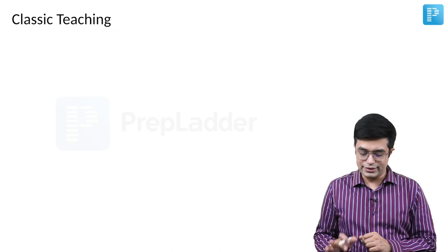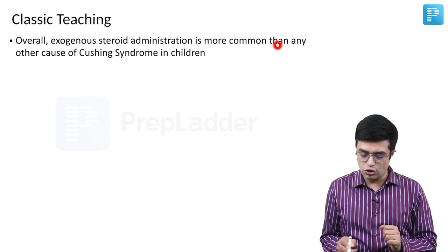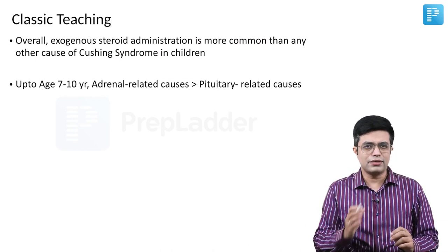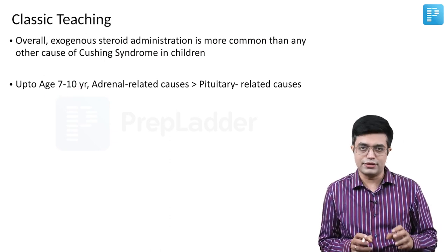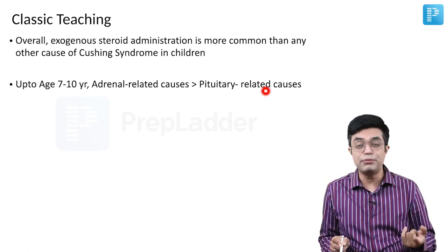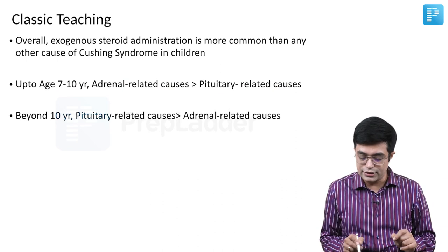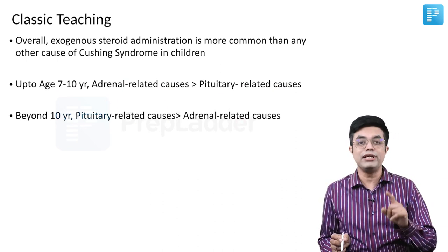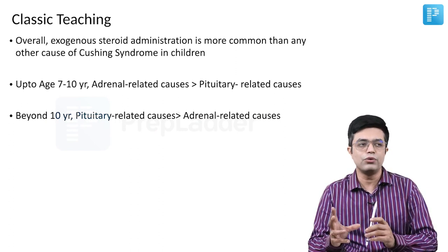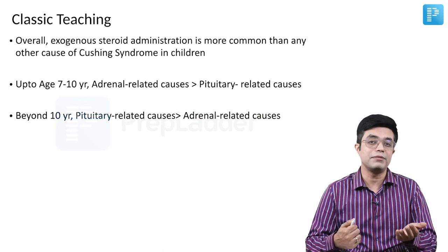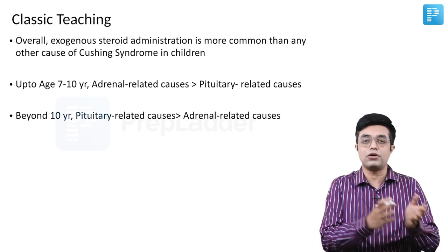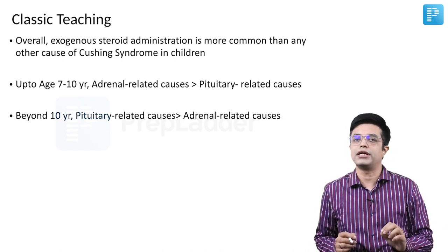Overall, exogenous steroid administration is the most common cause. Beyond that, Nelson and standard textbooks state that up to age 7–10 years, adrenal-related causes are more common than pituitary-related causes. However, beyond 10 years, pituitary-related causes become more common. So when exogenous steroids are not an option in a question, the answer depends on the child's age.